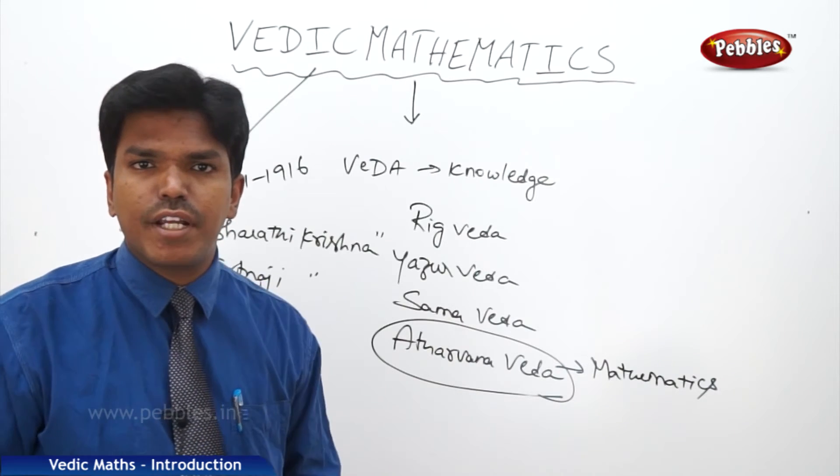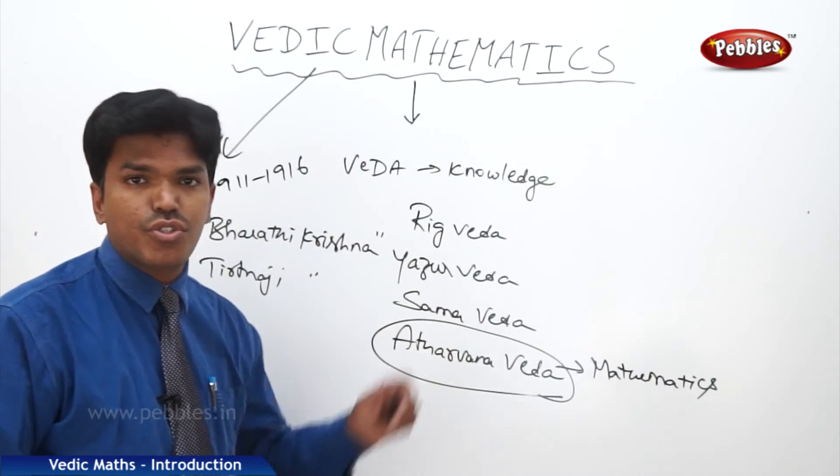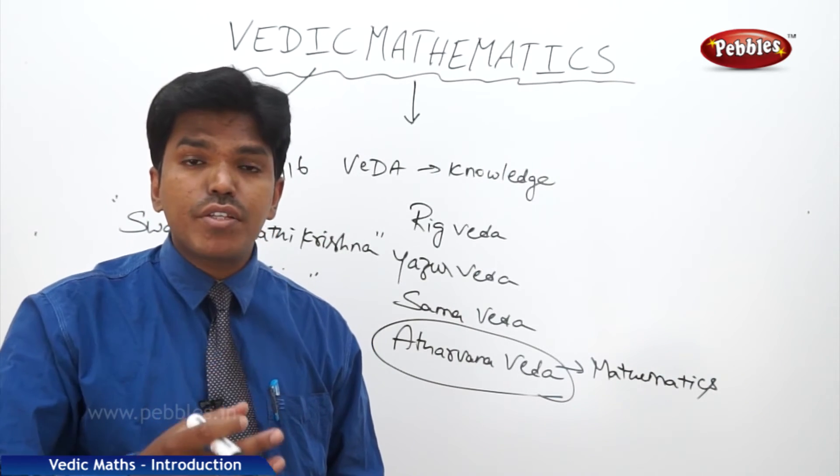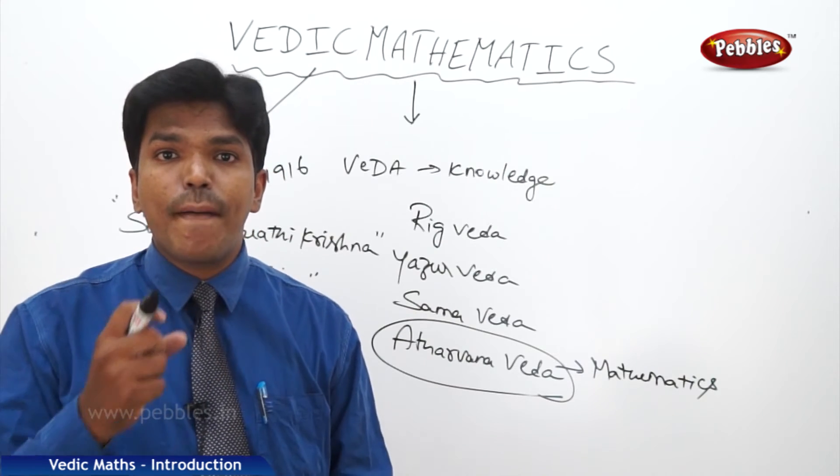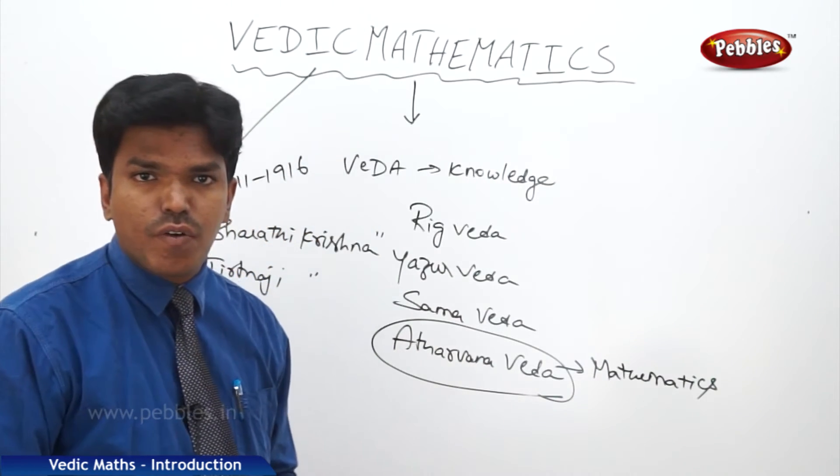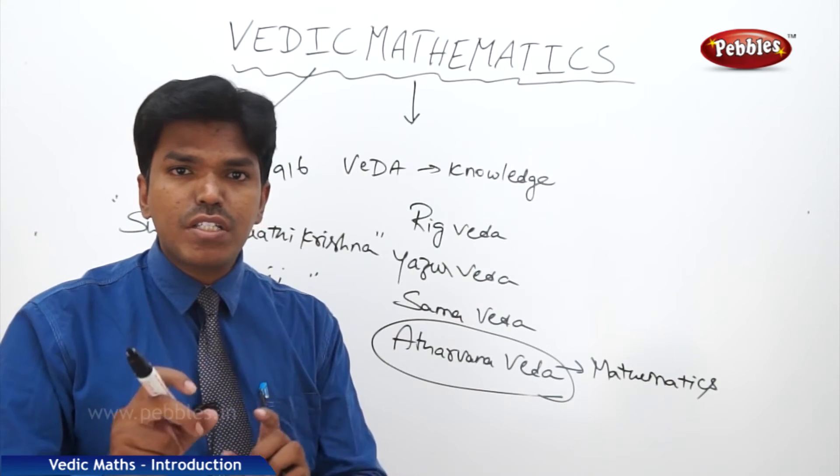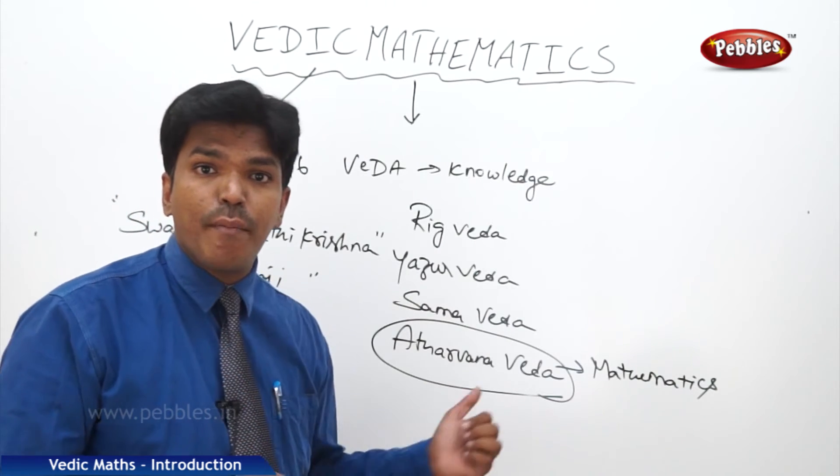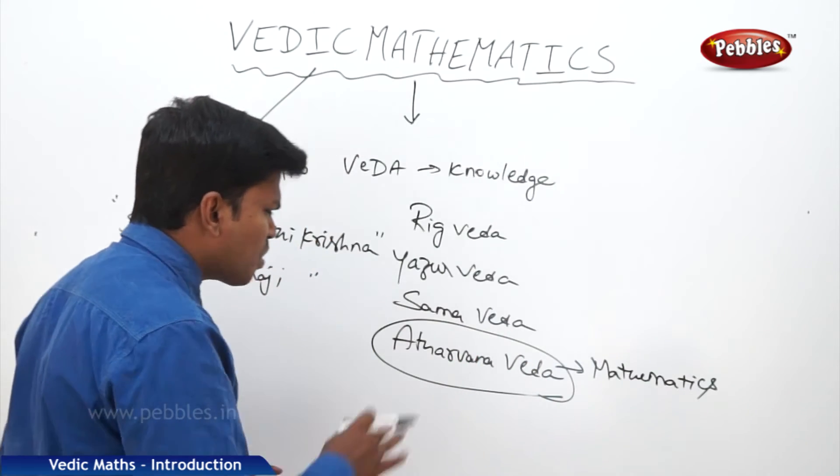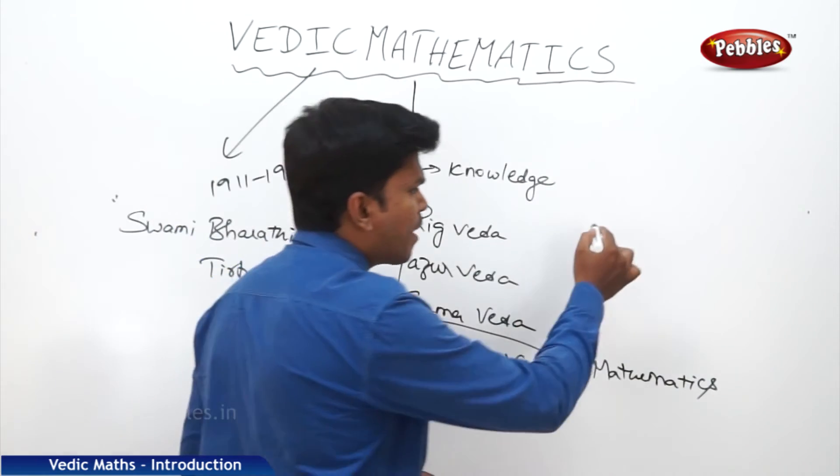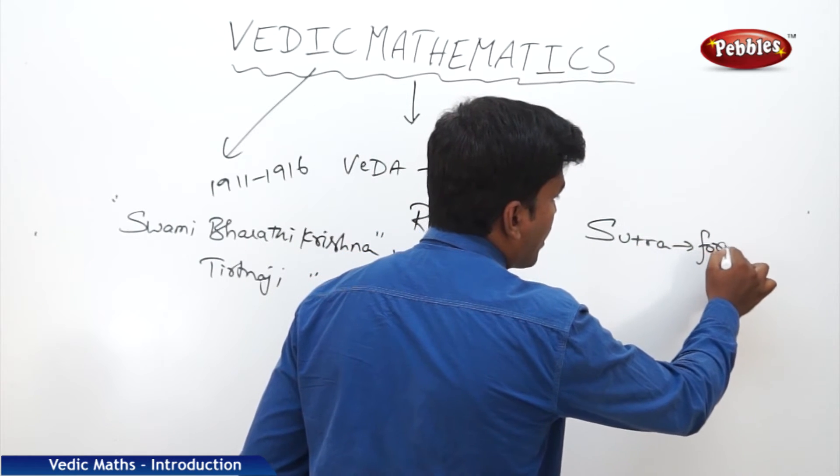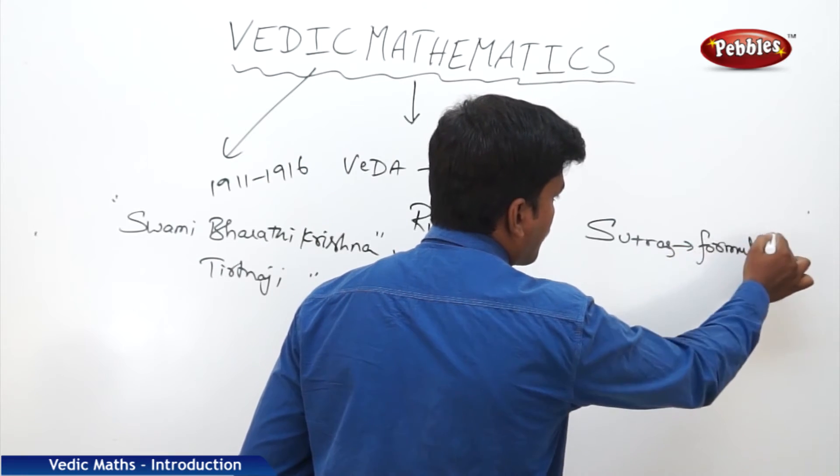So what this great personality did between 1911 to 1916? He went deep into meditation and he recollected all the sutras which are related to the maths from the fourth Veda, Atharvana Veda. Now, what do you mean by sutra? Sutra nothing but formulae.